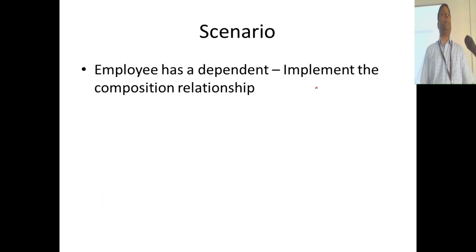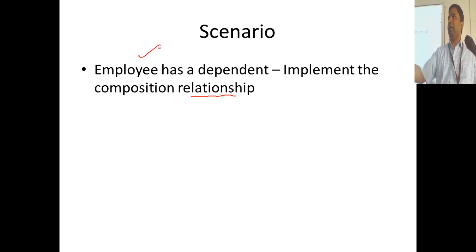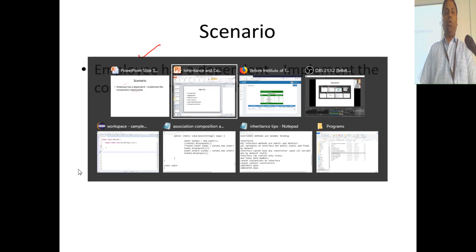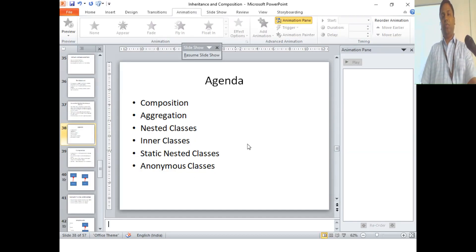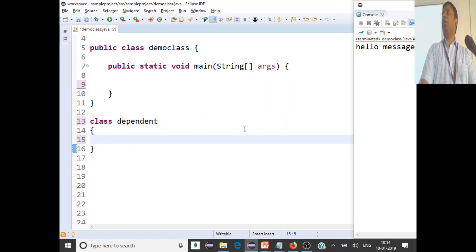We'll take an example and implement it. Whenever I create an employee, his dependent details should also be created. Say he has a father as a dependent. You should create an object of a dependent and assign attributes for his dependent while you are creating an employee. So while you are adding an employee, you will also get his dependent details. Now let's go and implement — we are going to see how composition works. We will first create this class dependent.